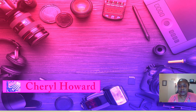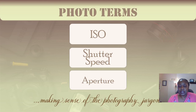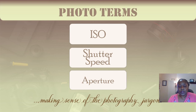ISO, shutter speed, and aperture as it relates to the exposure triangle. The exposure triangle is a way of associating these three variables — aperture, shutter speed, and ISO — to determine the exposure of a photograph. As photographers, we must balance all three of these to achieve that remarkable standout image, knowing that an adjustment in one of these areas requires an adjustment in at least one of the others.